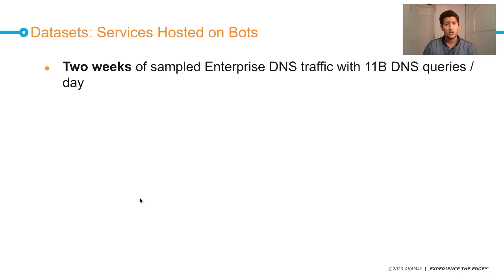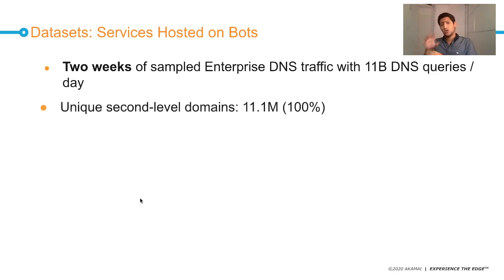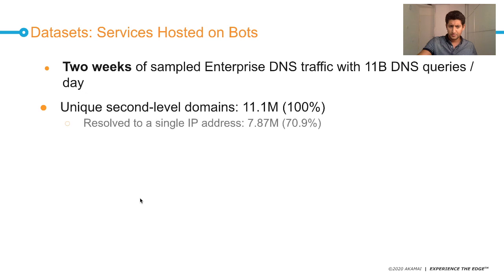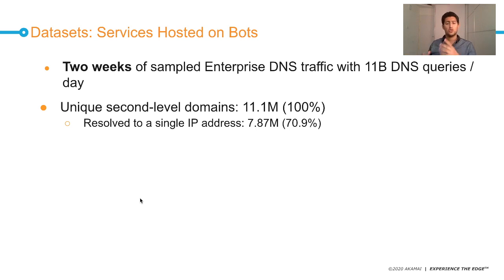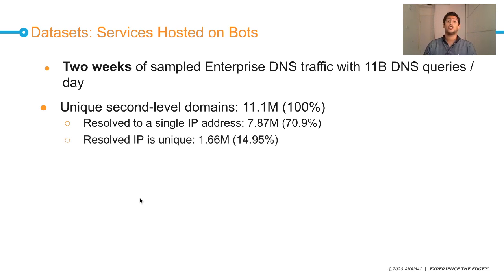For the second dataset, we sampled two weeks of enterprise DNS traffic with 11 billion DNS queries per day. From those queries we extracted the domains, ending up with 11.1 million domains. We worked at the second-level domain because we performed this analysis with only primary domains. Most of them resolve to a single IP address — nowadays, with shared hosting platforms, most websites share their IP, meaning one IP hosts several websites.